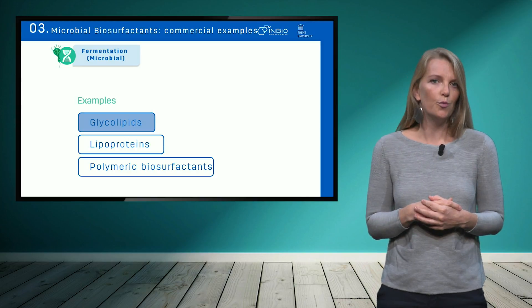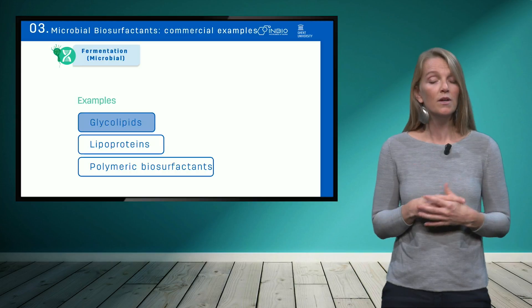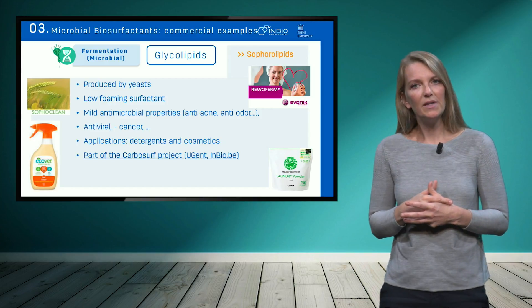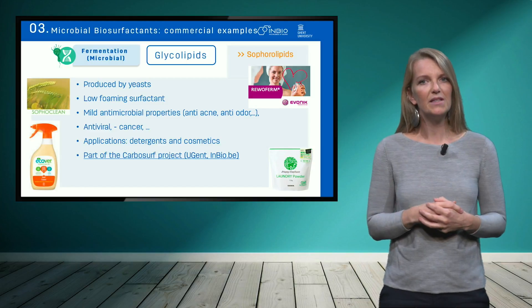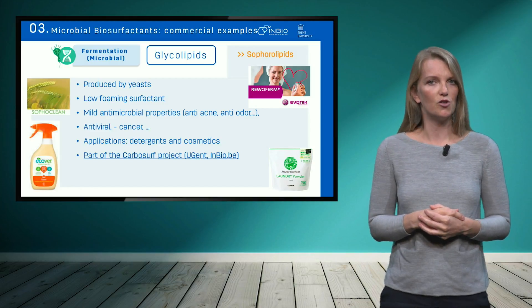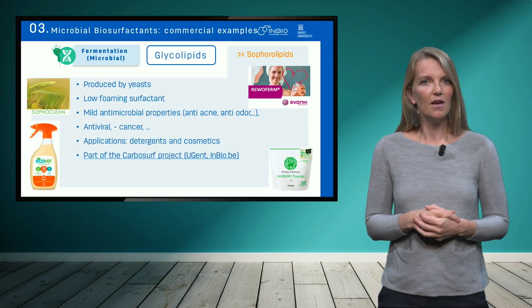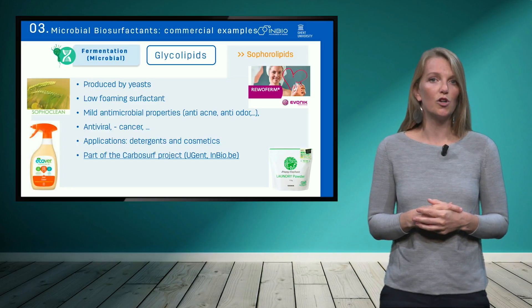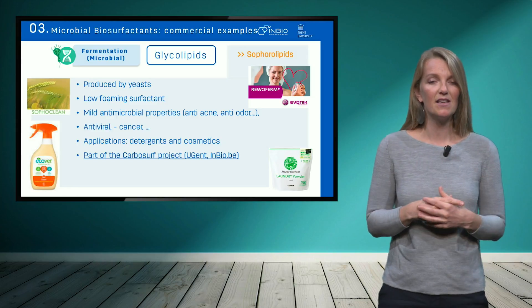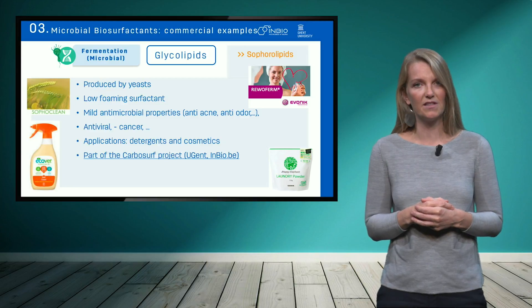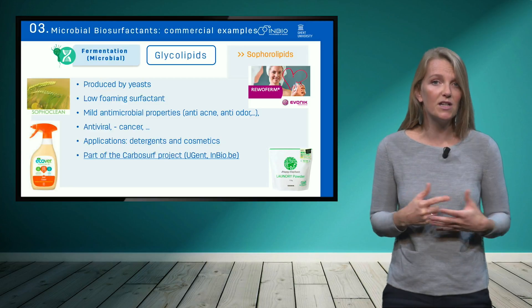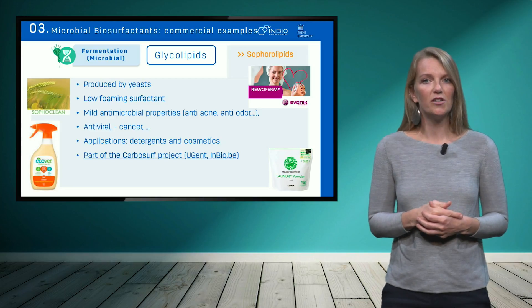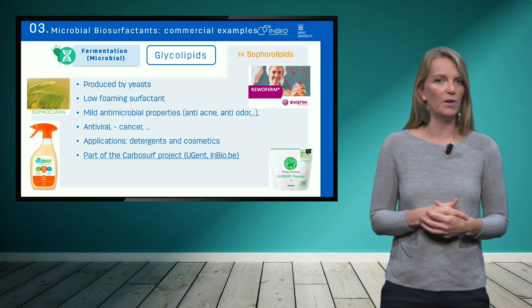Glycolipids are the group with the most commercial examples, and I will give four examples. Sophorolipids — sophorose sugars attached to a lipid — are produced by certain yeast species. They mainly find application in detergents and personal care, due to the combination of their cleansing effects and their mild antimicrobial properties, for example against microorganisms causing armpit odour or dandruff. The wild-type mixture has mild to no foaming properties.